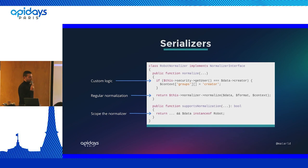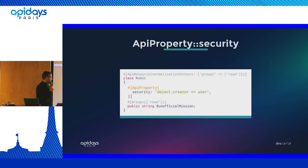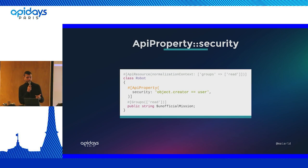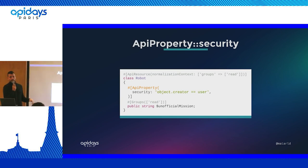Again, as you may guess, there is a simpler solution: since the expression language provides access to the current resource and user, you could have just written object.creator == user. Done. So that's great.